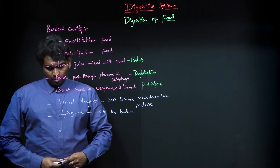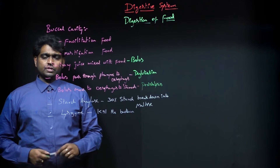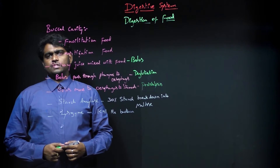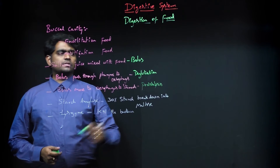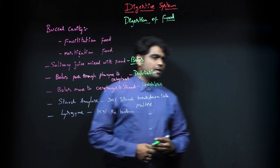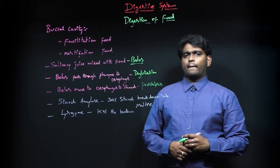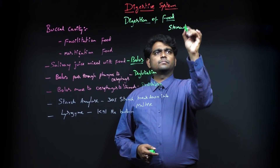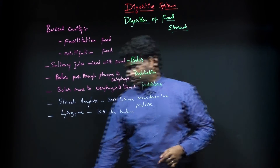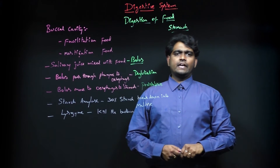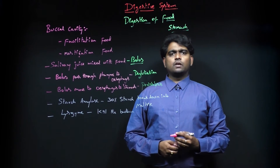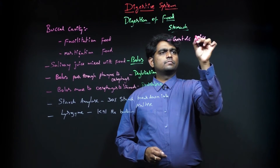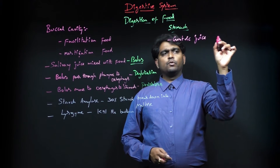These are the roles of the buccal cavity's salivary juice. The food which is mixed with salivary juice in the buccal cavity is called bolus. Now, moving to the stomach — the bolus enters the stomach, which also secretes a juice called gastric juice. The gastric juice mixes with the bolus.